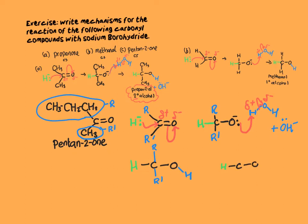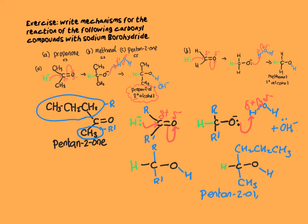This is a useful trick when you're asked to draw a mechanism with quite large molecules. We put our R dash back in, which was CH3, and we put the R group on, which was the propyl bit. If we count the number of carbon atoms, the longest chain is 5, the OH group is on carbon 2, and that is pentan-2-ol from pentan-2-one — a secondary alcohol from a ketone.